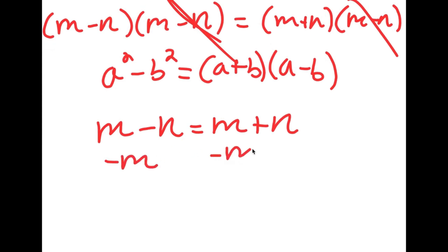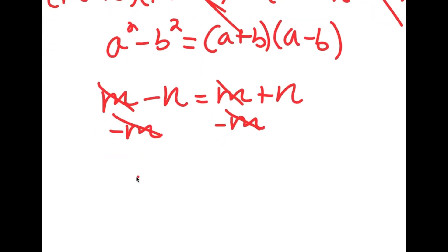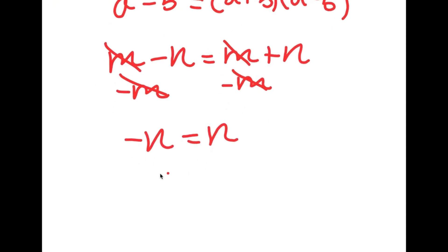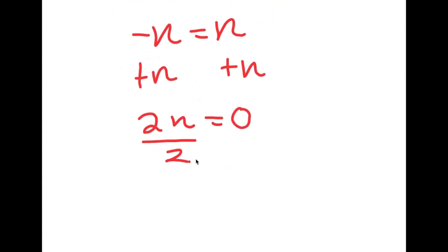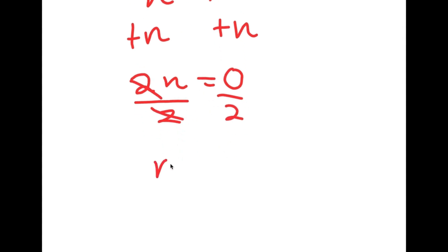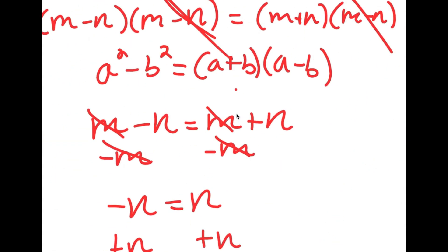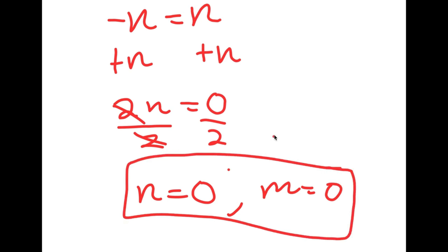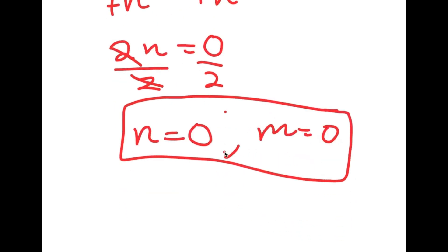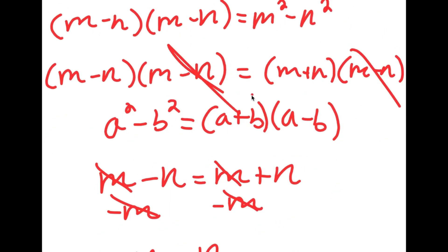Subtracting m on both sides gives negative n is equal to positive n. Adding n on both sides gives 2n is equal to 0, meaning n is equal to 0. And if n equals 0, then m is also equal to 0. So these are my two solutions to this equation.